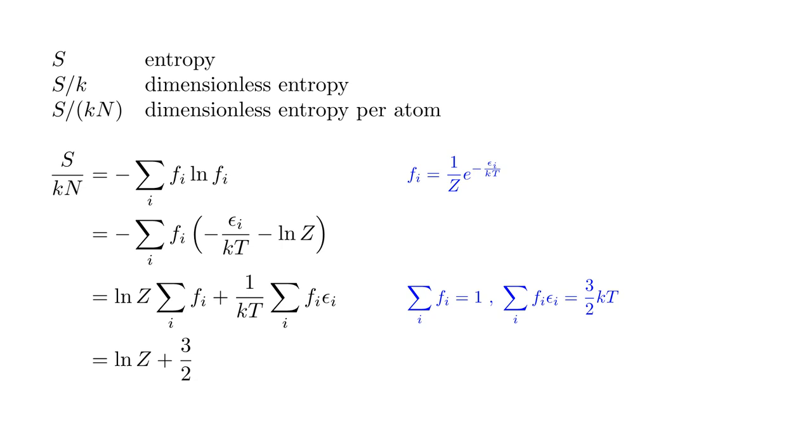Because sum over I FI equals one, and sum over I FI epsilon I equals the average energy per atom three-halves K-T, this reduces to log Z plus three-halves.